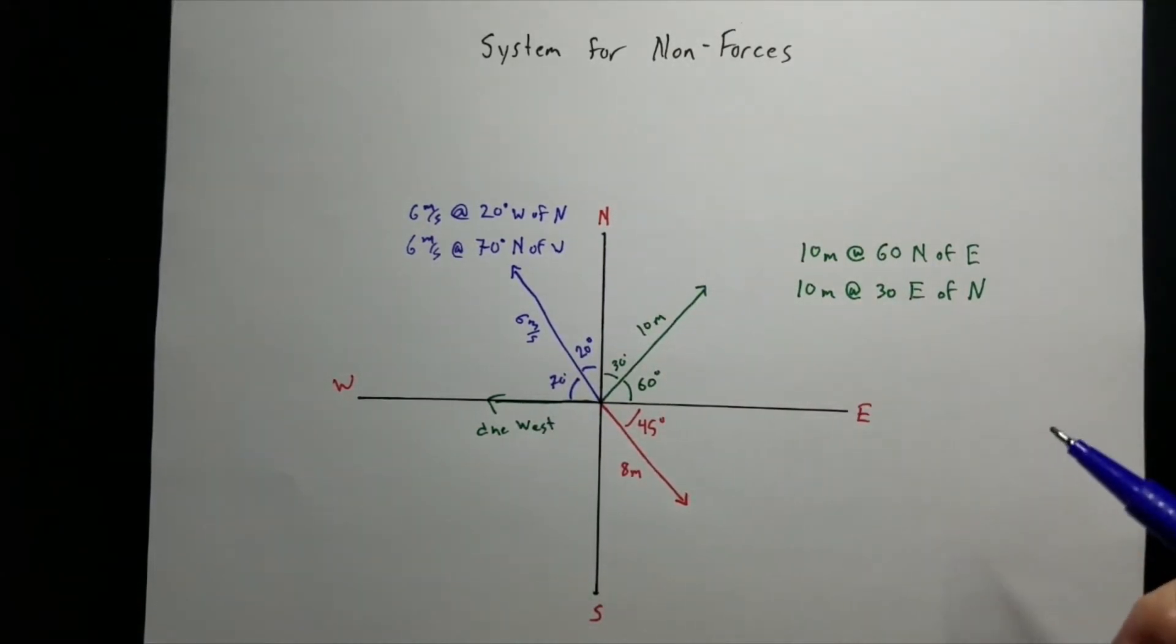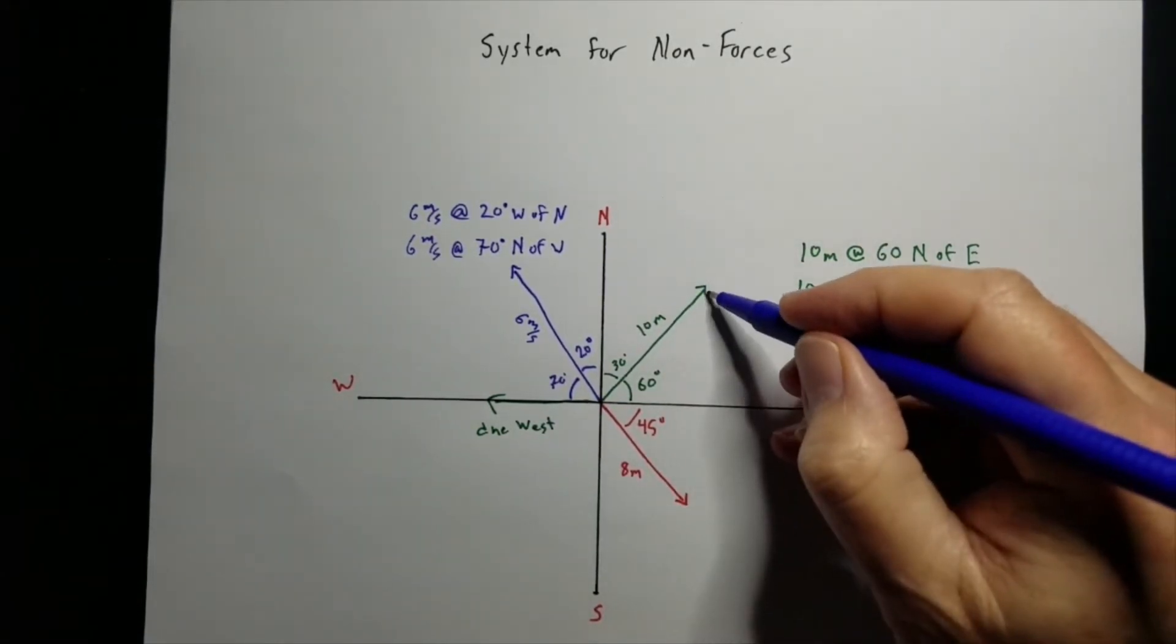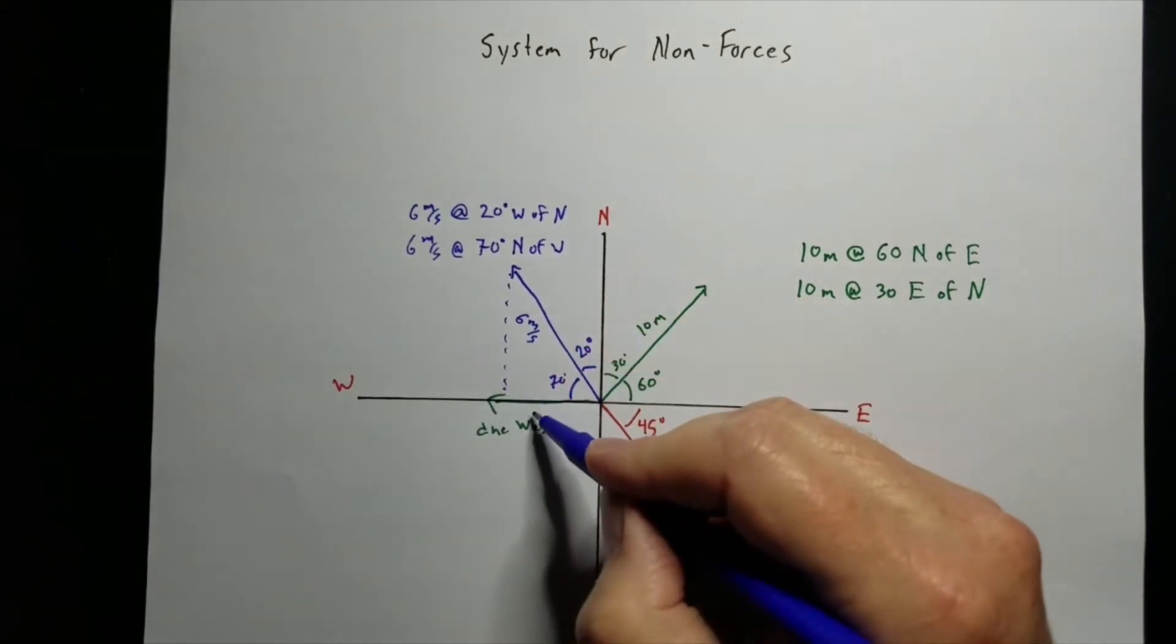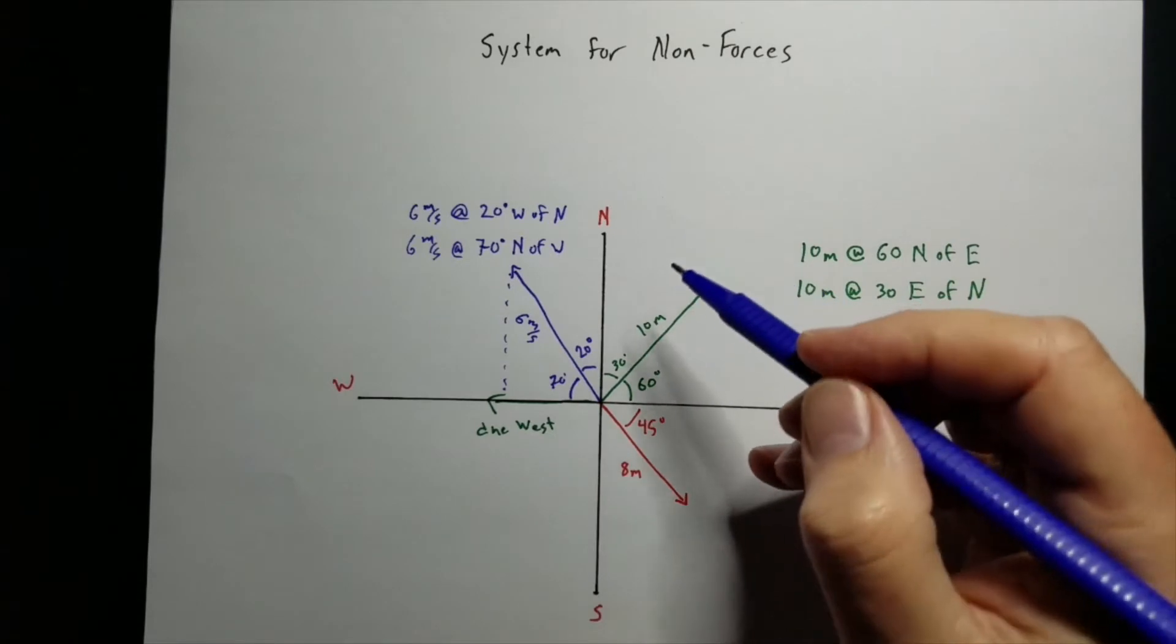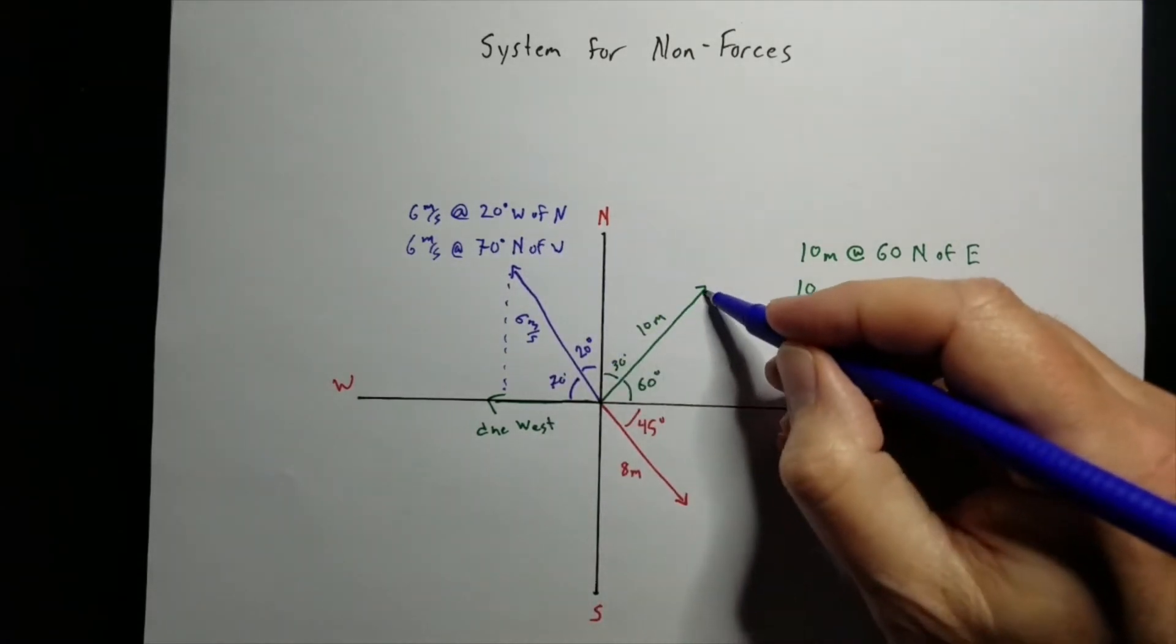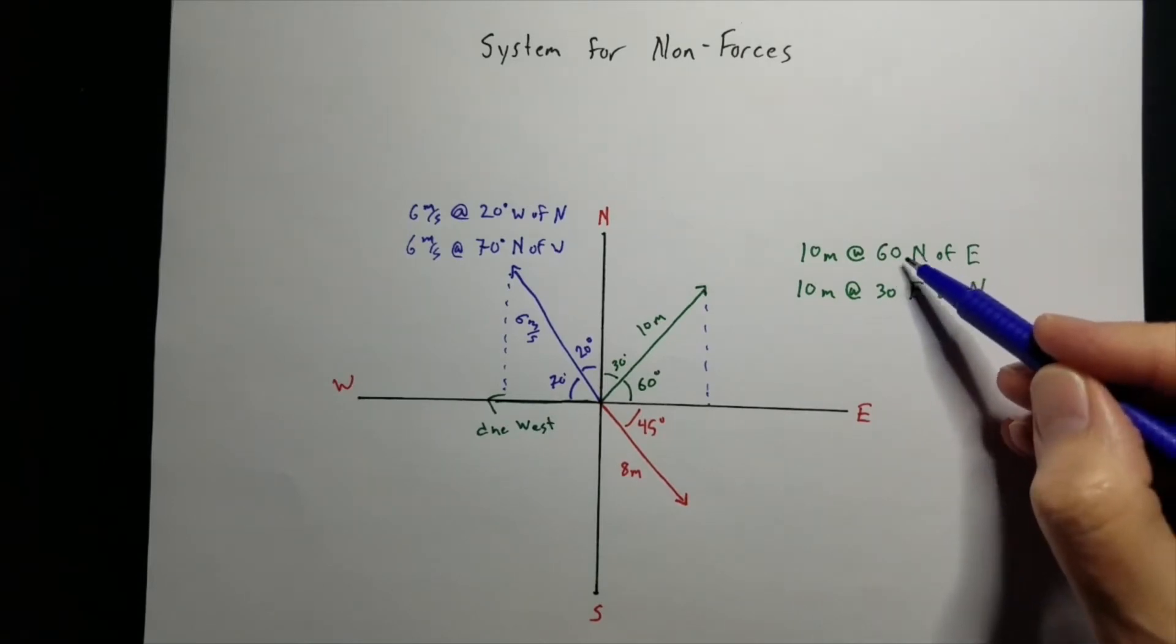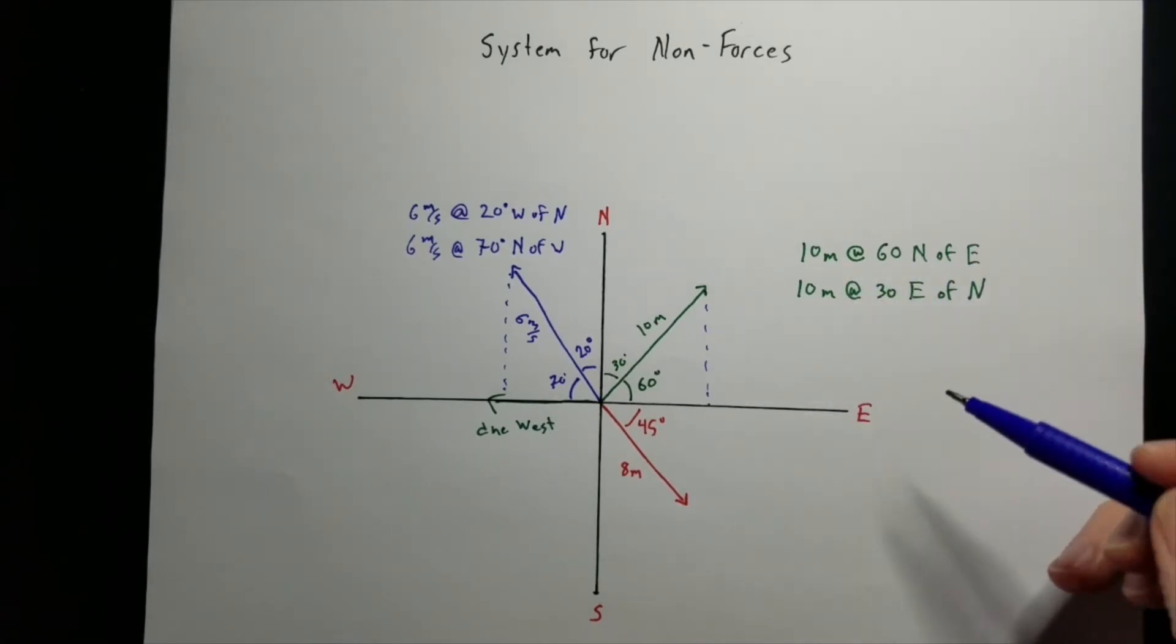Now, I actually prefer these that go to the x-axis. So I would actually prefer the 70 degrees north of west for this one and the 60 degrees north of east for that one.